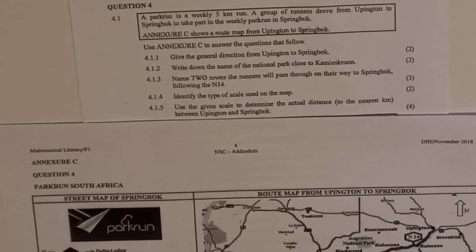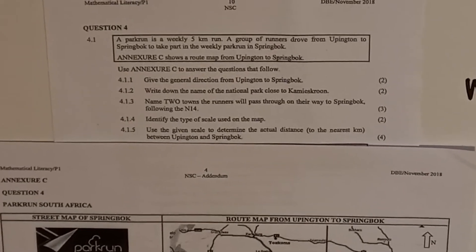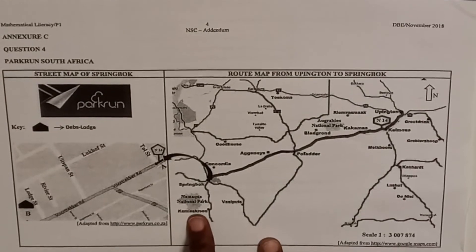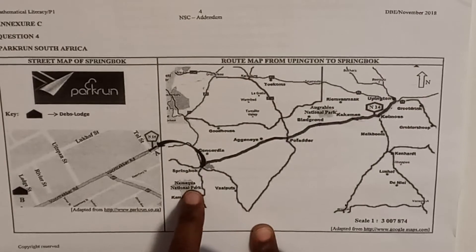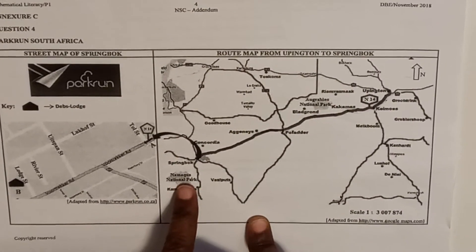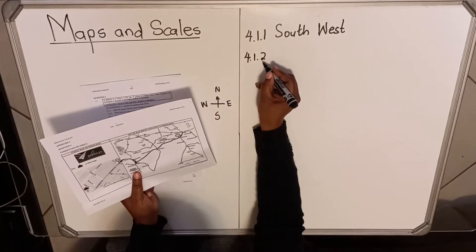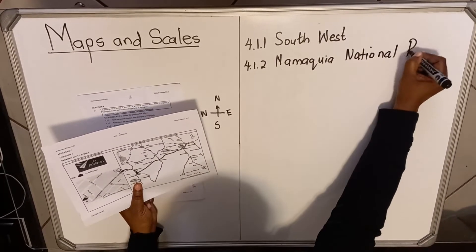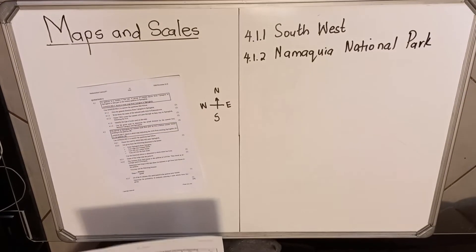Question 4.1.2: write down the name of the national park closest to Camerskwon. You go to the map and look for Camerskwon — here it is. The national park closest to that town is Namakwa National Park. You copy the spelling directly from your map, so the spelling will be correct.